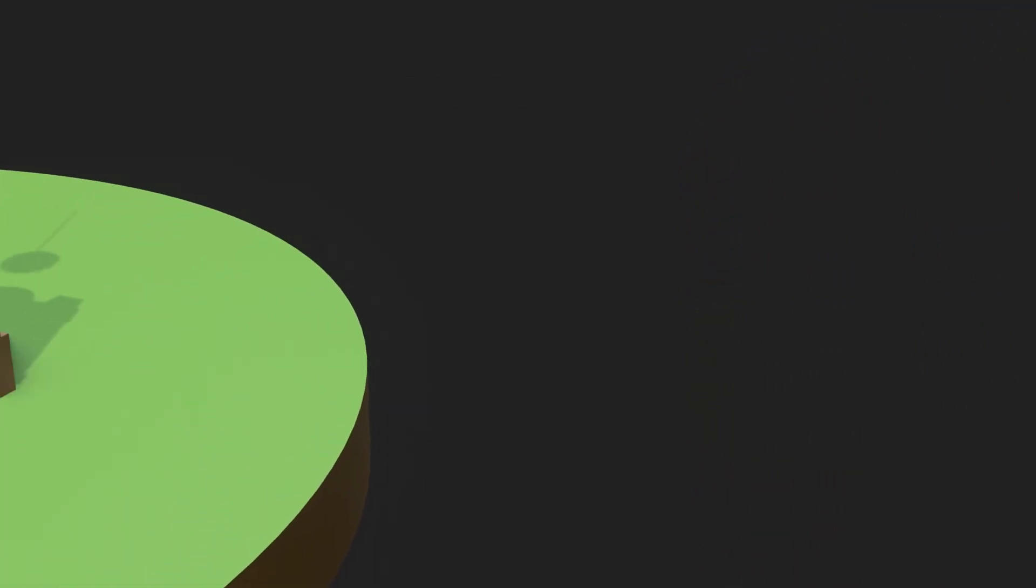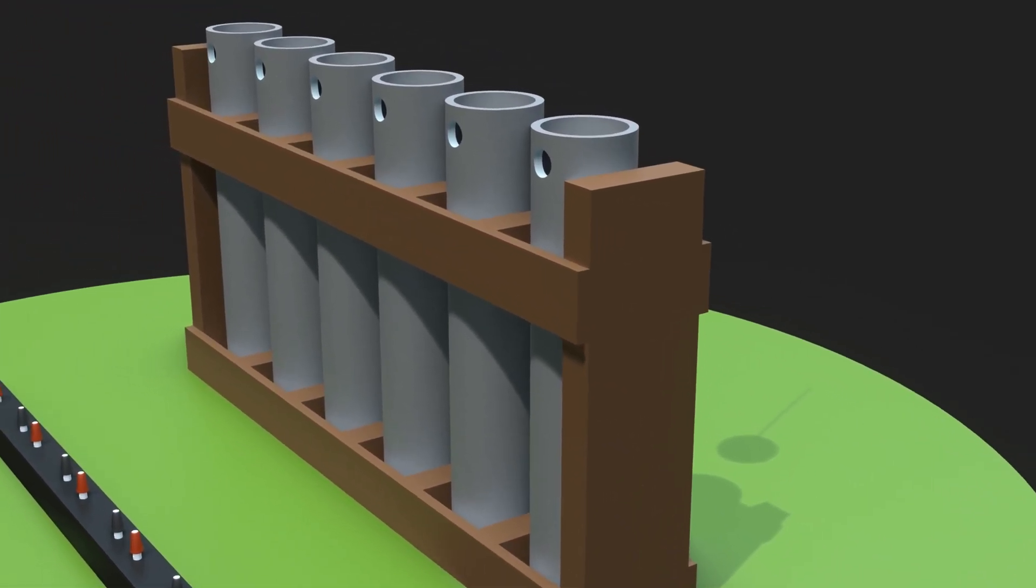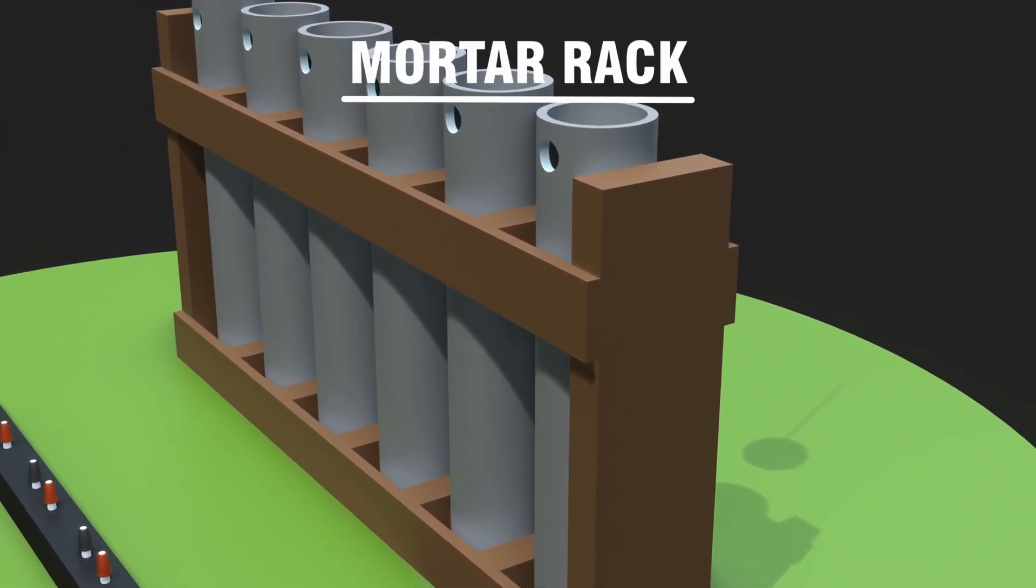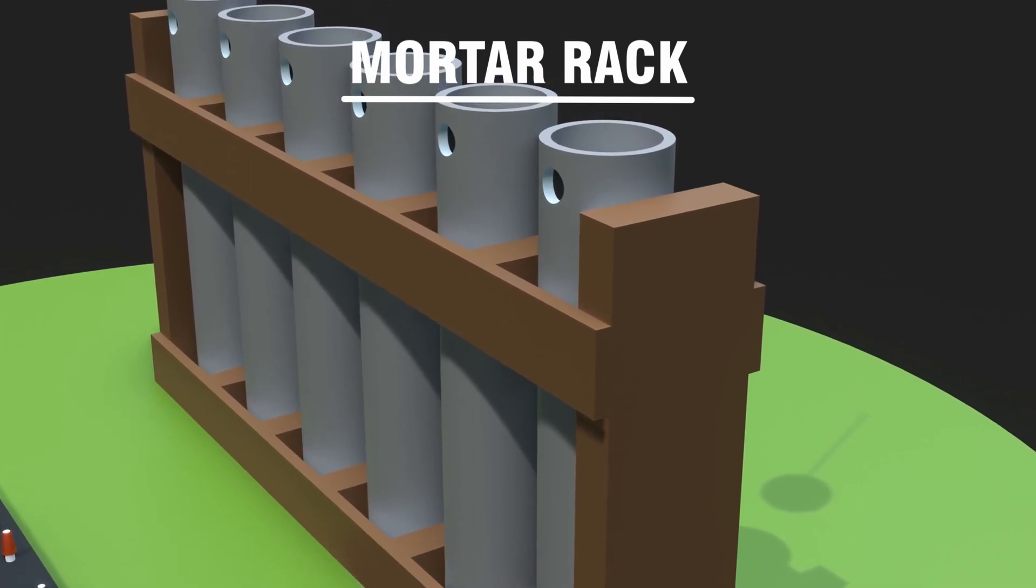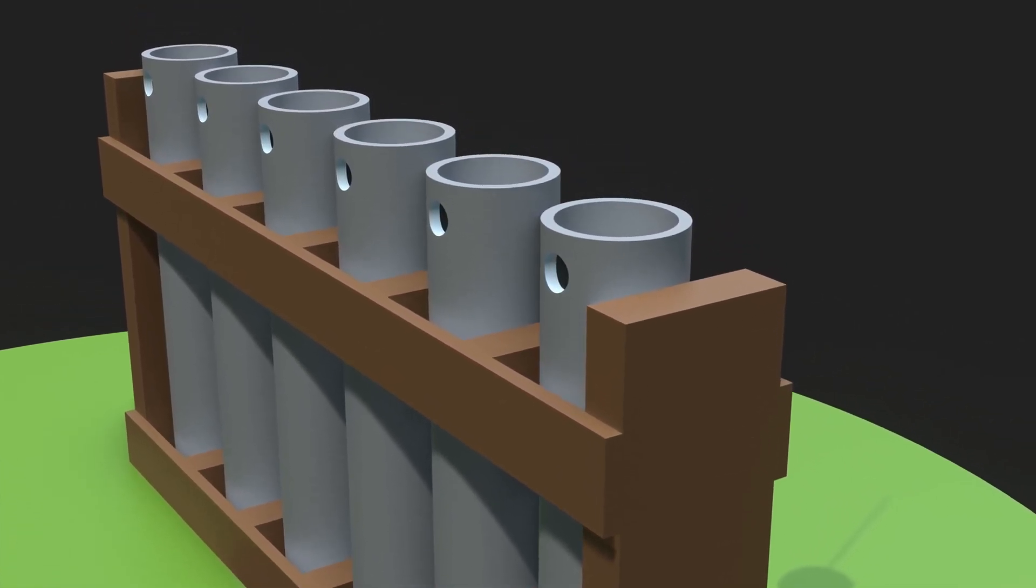For aerial shells, a mortar rack must be used. There are various designs and materials used, from cardboard to metal. The thickness, size, and material depend on the size of the shell.